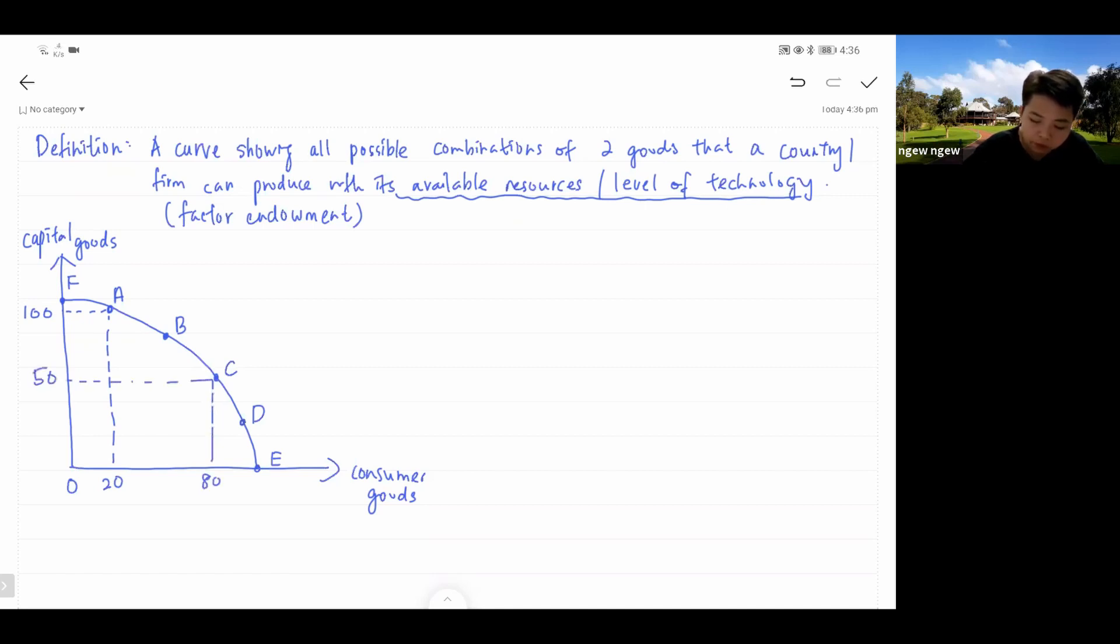Therefore, the first thing you need to understand while doing your PPC is what is meant by the curve itself. The curve shows your country's productive capacity or productive potential. And what constrains your country's productive capacity or productive potential is your quantity of resources. How much resources you have will constrain how many units of capital goods or consumer goods or combined capital goods and consumer goods that you can produce.